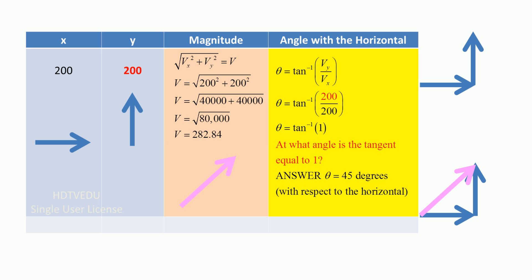Along the horizontal, we have 200 units. Along the vertical, we have 200 units. So what is the magnitude? Magnitude is given by square root of vx squared plus vy squared.